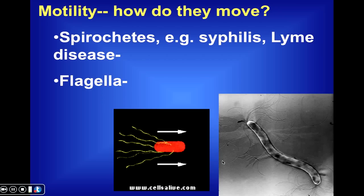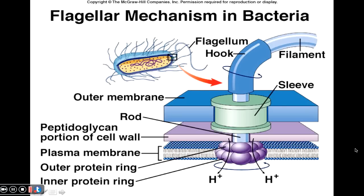Other bacteria actually produce flagella, which propel the cells through their environment. What's interesting about bacterial flagella is that unlike the flagella of sperm cells, which essentially just whip back and forth, bacterial flagella literally spin. We can see a schematic representation of bacterial flagellar structure embedded in the cell membrane and outer cell wall. This may essentially be the only case in nature where we have a spinning wheel. The structure and mechanism of activity of bacterial flagella is largely different from the flagella found in eukaryotic organisms.